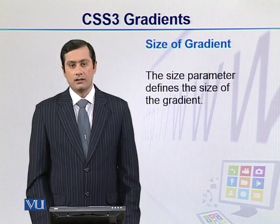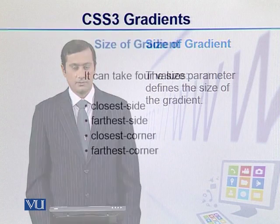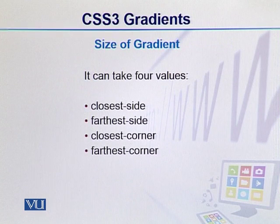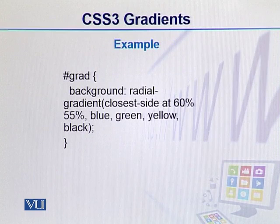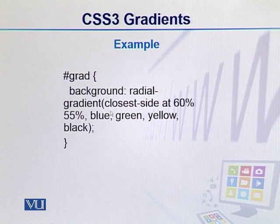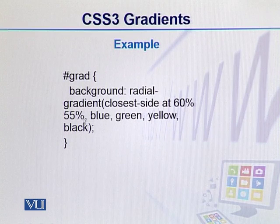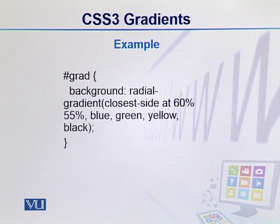We can also mention the size of the radial gradient. The size can take four values: closest-side, farthest-side, closest-corner, or farthest-corner. In this example, we have a radial gradient where the size is closest-side at 60%, and then we have mentioned the color stops.